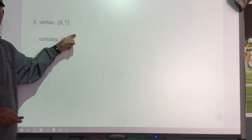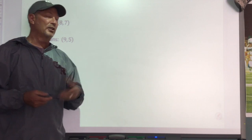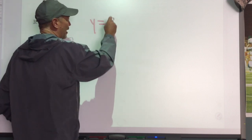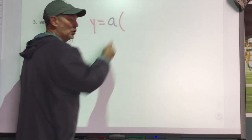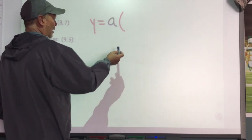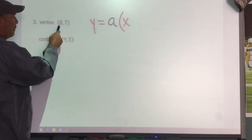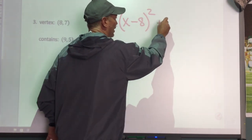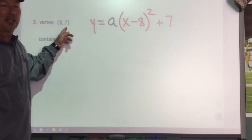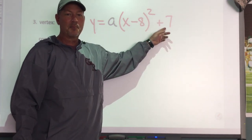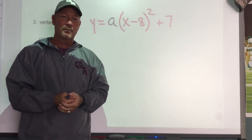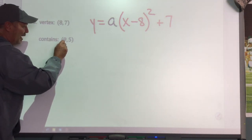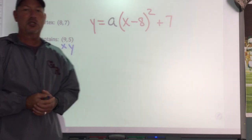Let's try another problem. Here's my vertex. You could get started and say: y equals a times (x — what's the opposite of minus eight? — plus eight) squared plus seven. I've substituted in my vertex. But now I need to find my a value. They give you an x value and a y value to substitute in to find it.